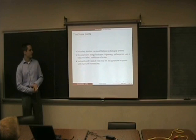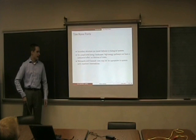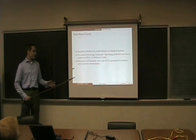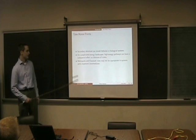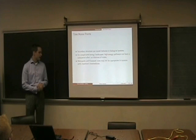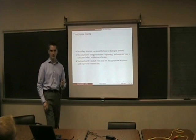So that brings me to the three take-home points that I hope everyone will be able to walk out of this room and say with confidence. One, that secondary structure models can model the behavior of biological systems. Second, that on complicated energy landscapes, high energy pathways can have a substantial effect on the lifetimes of states. It's not always okay just to consider the saddle point when you're talking about a first passage process. And third, that the Metropolis and Kawasaki rules may not be appropriate in systems with important intermediates. And I will define later what an important intermediate might be.